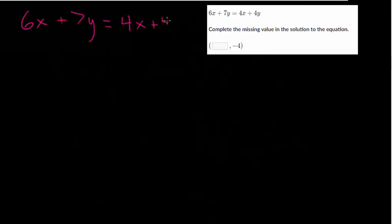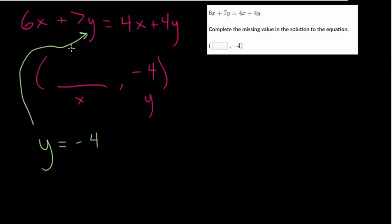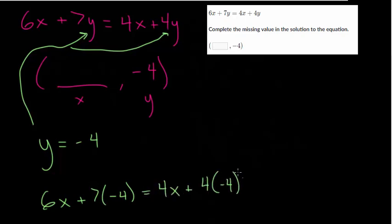So we'll do this final question. It's the same type of problem. Where we're given this equation and we're asked to find the missing value in the solution. So we don't know x this time. But we know that y is negative 4. So we're going to use that piece of information. We'll just set y equal to minus 4. And anywhere we see a y we're going to plug it in. And then we can solve for x. So you get 6x plus 7 times minus 4 for y. It's equal to 4x plus 4 times minus 4 for y.